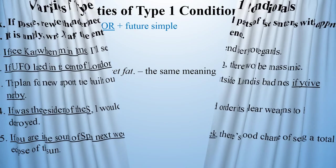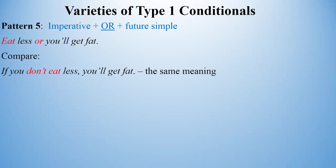Sometimes conditional meaning can be expressed without an if clause whatsoever. An imperative and the coordinator 'or' are used instead. For example, look at this conditional sentence: 'If you don't eat less, you'll get fat.' The same meaning can be expressed by: 'Eat less or you'll get fat.'